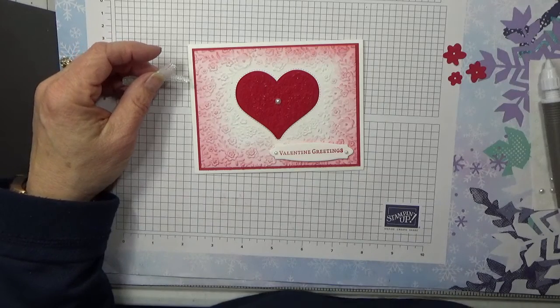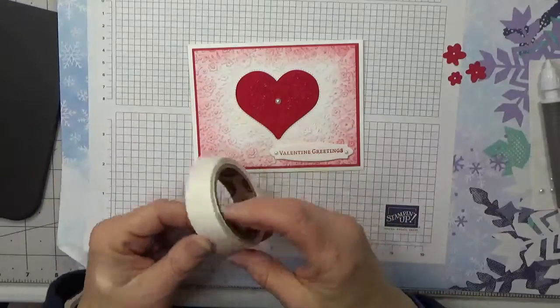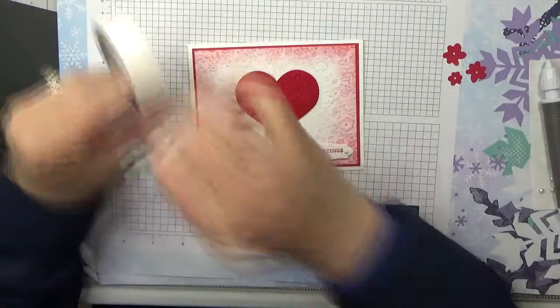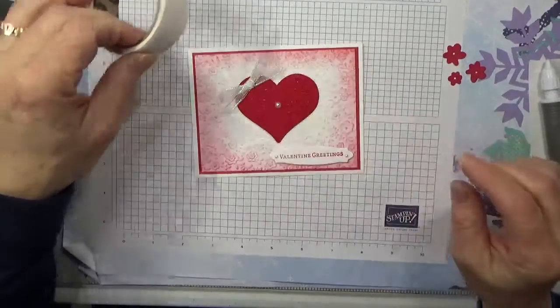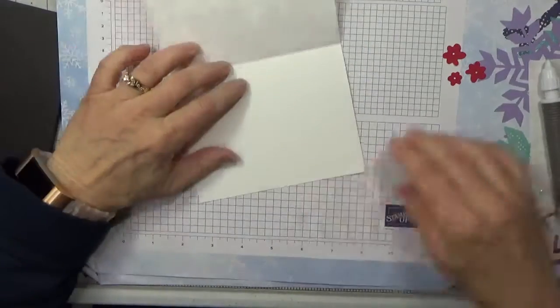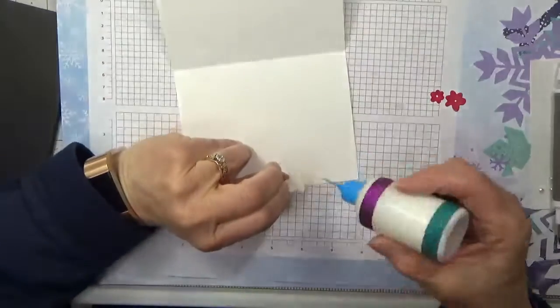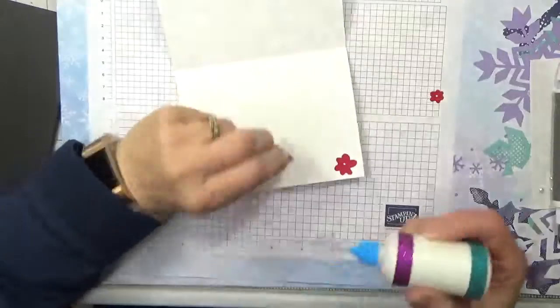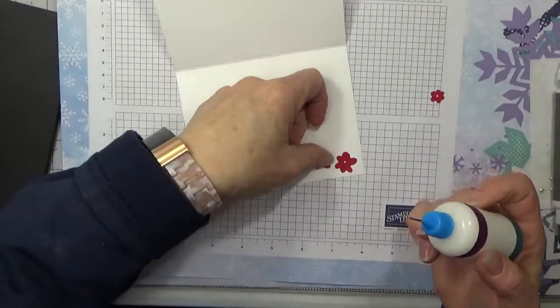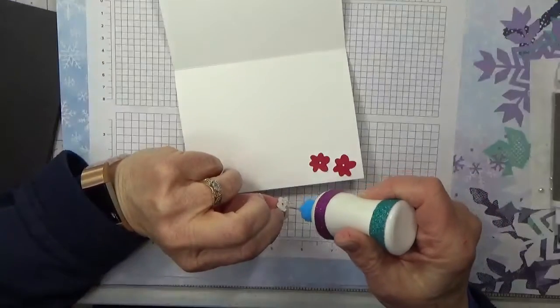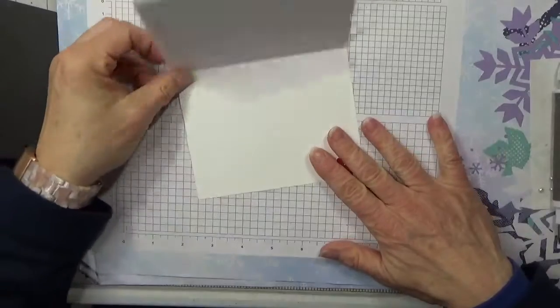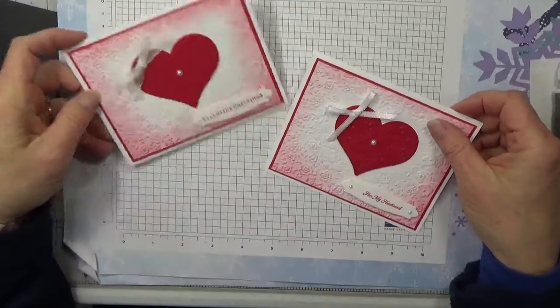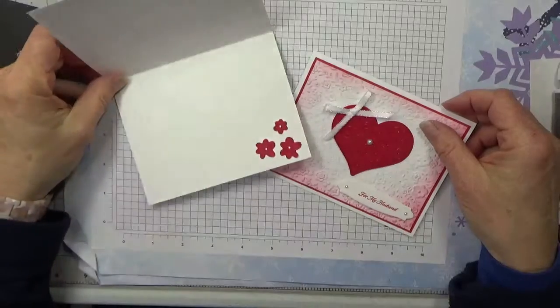I'm going to get a glue dot. I can find where they end and stick that right there on the heart. And then for the inside, these three little flowers come in. I'm just going to put these three flowers down on the inside, and there we have a Valentine's card. There we go!